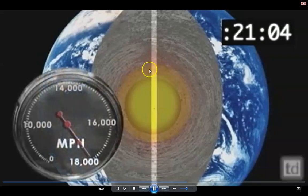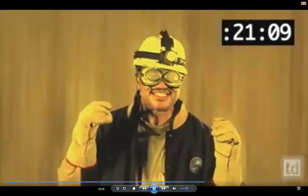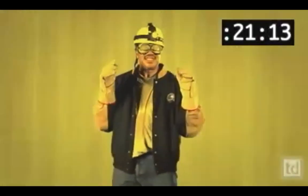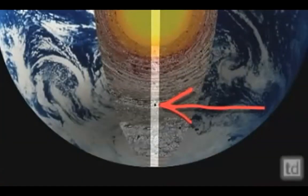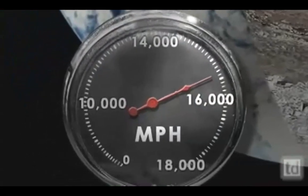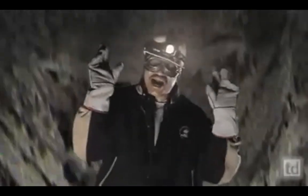21 minutes into my fall, and I'm at the center of the Earth, going my fastest, about 18,000 miles an hour. As I pass the center, gravity now works against me, slowing me down. And by the time I make it halfway between the core and the other side of the Earth, I'm back down to about 15,000 miles an hour.